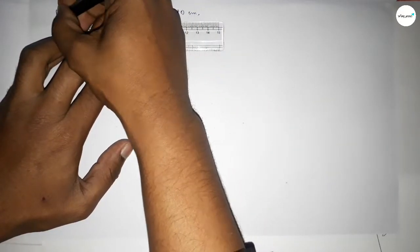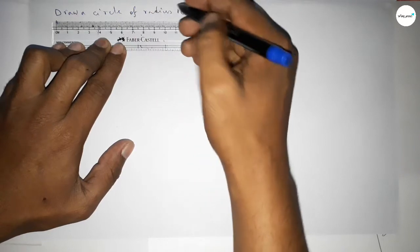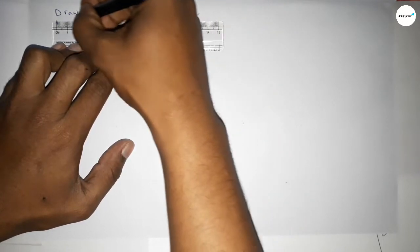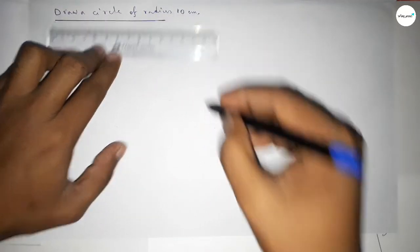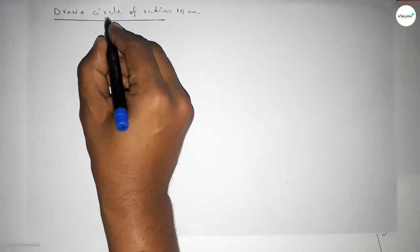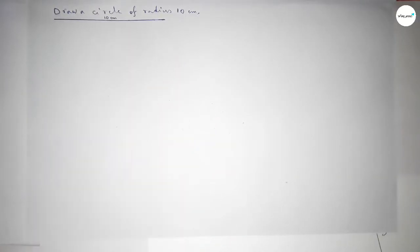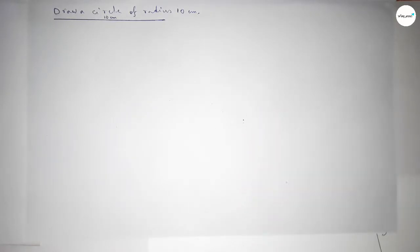First, drawing here. This is starting 0, 1, 2, 3, 4, 5, 6, 7, 8, 9, 10. So we have to draw the radius 10 centimeters here. This is a 10 centimeter line. Now taking a point here.